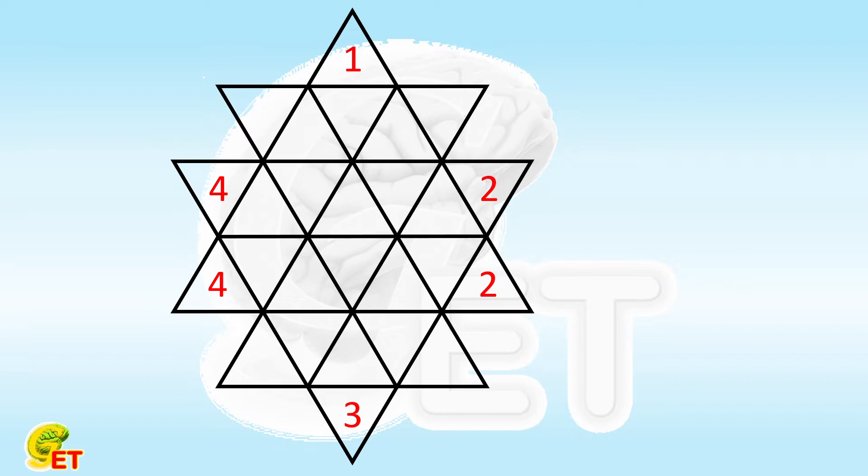We start from top to bottom, using 1 to fill the opposite triangle as many as possible. 1, 2, 3, 4, 5, 6.